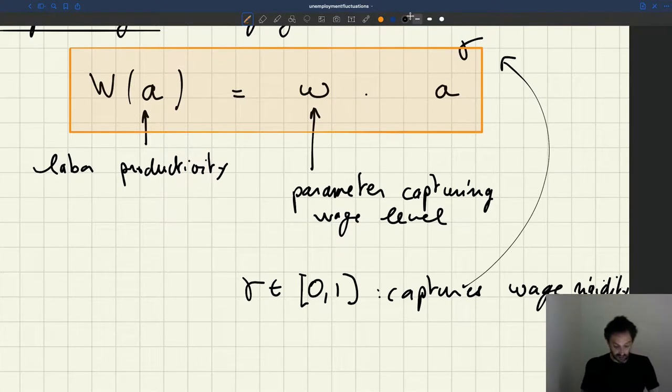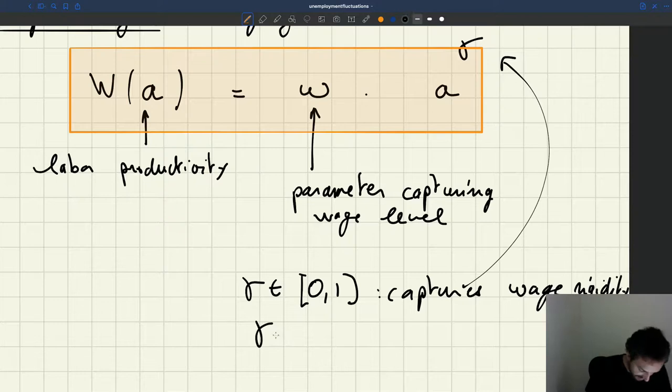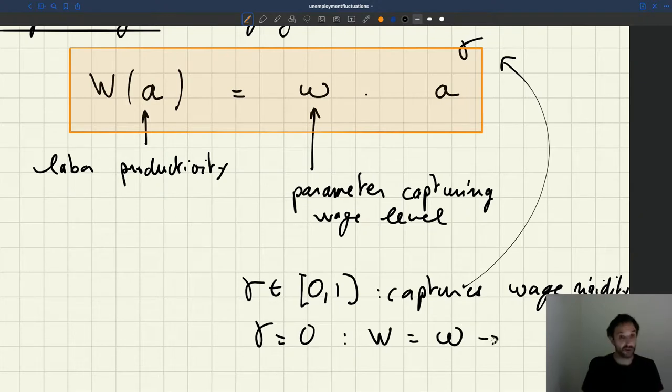So gamma can be between 0 and 1, and that captures the rigidity. So there are two extreme cases. Gamma equals 0, then we get that the wage is equal to omega, which is a parameter. So here we are back in the situation with a fixed wage that we dealt with earlier.